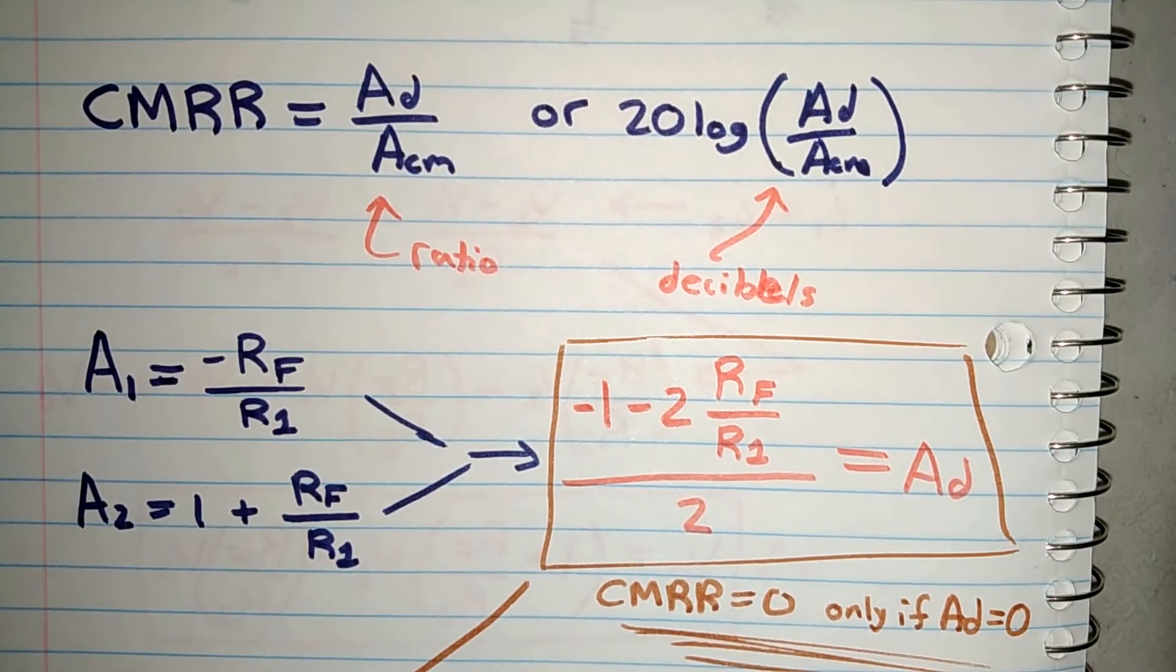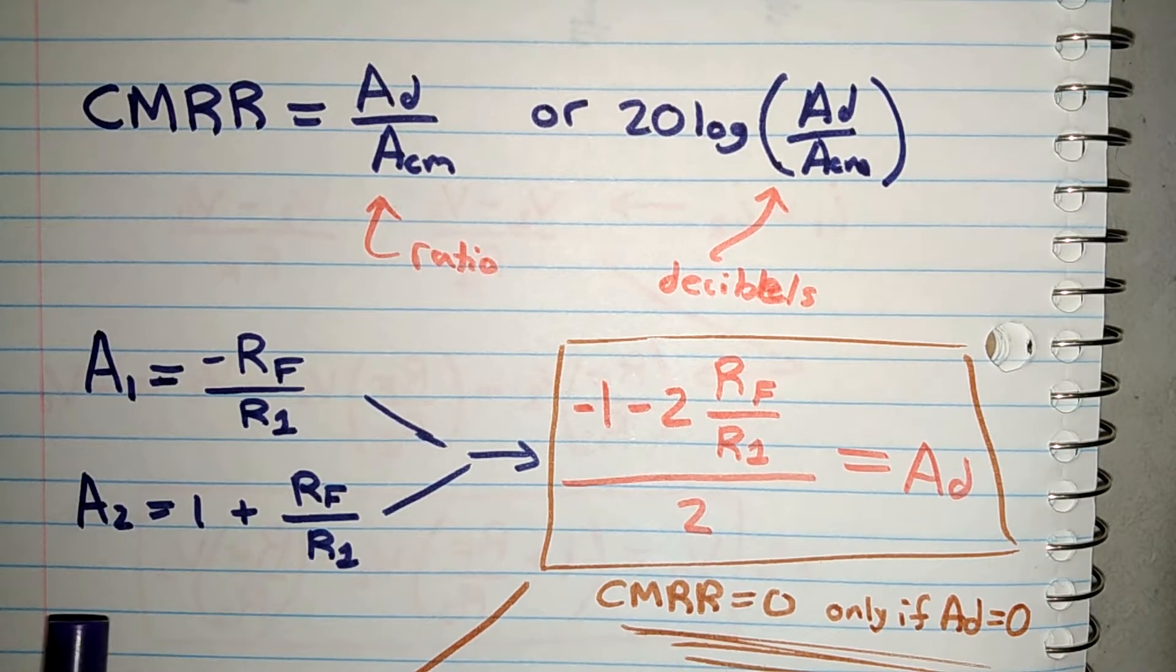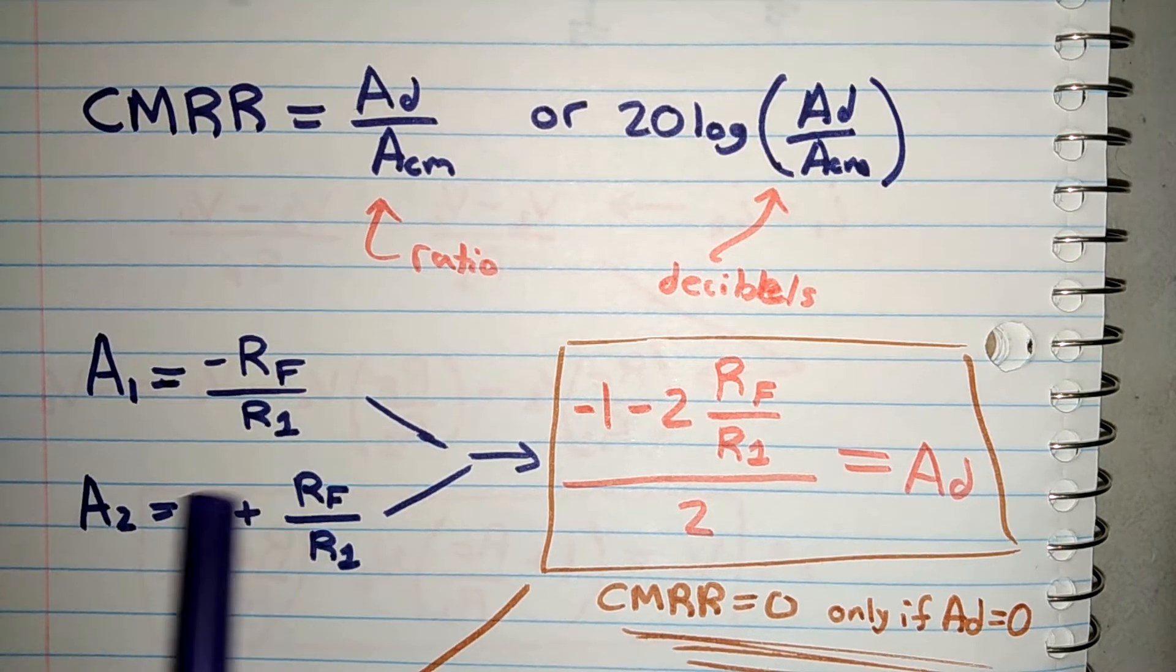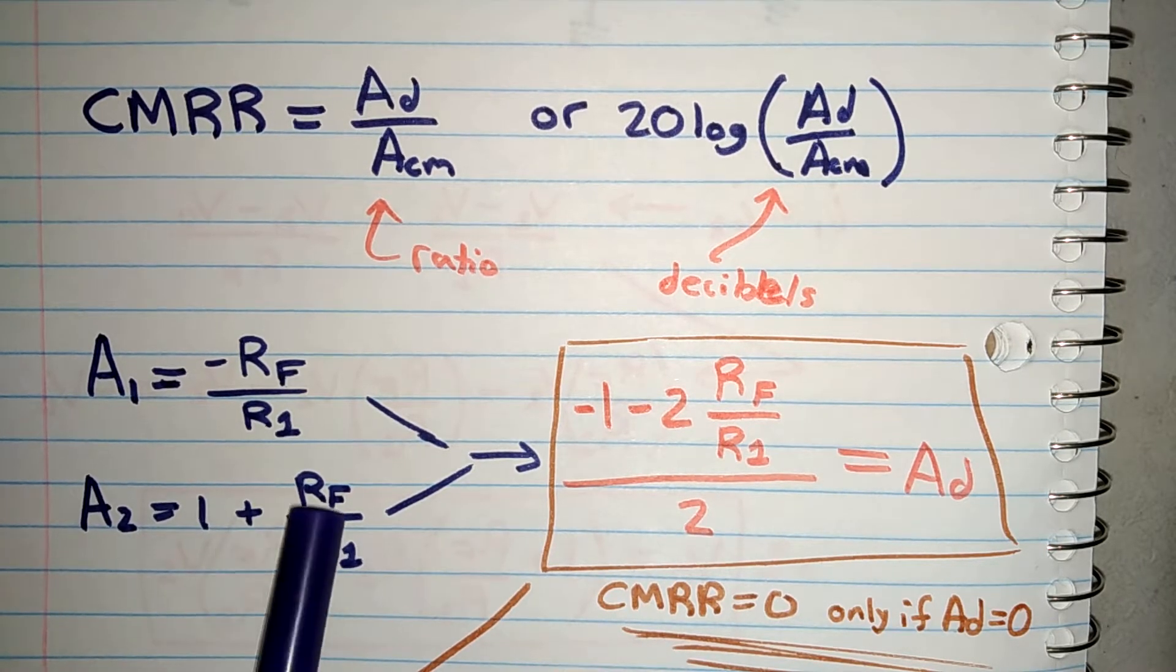So in the previous circuit that I showed in the previous video, we found out A1 to be negative RF over R1, and then A2 to be 1 plus RF over R1.